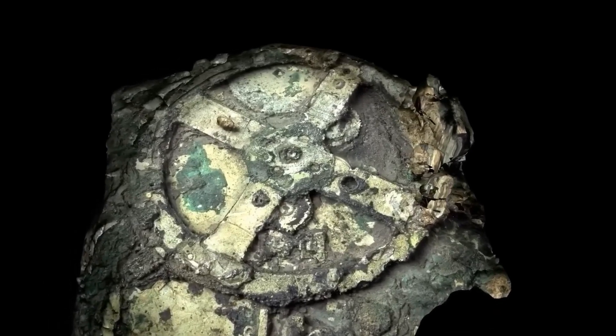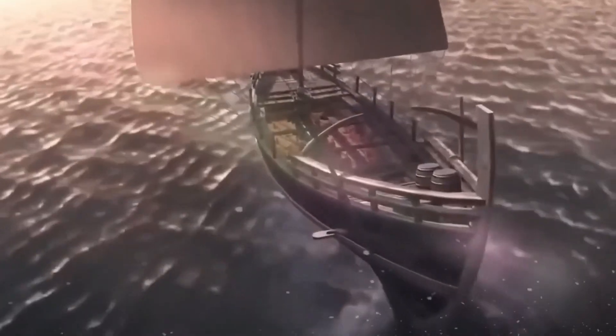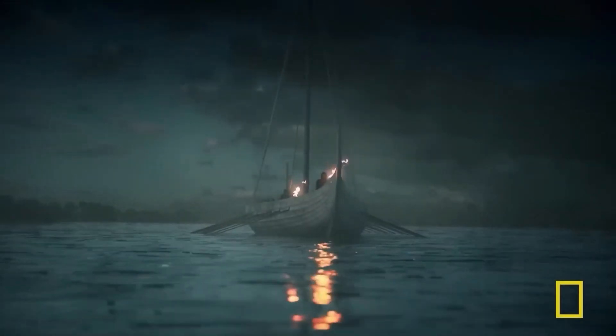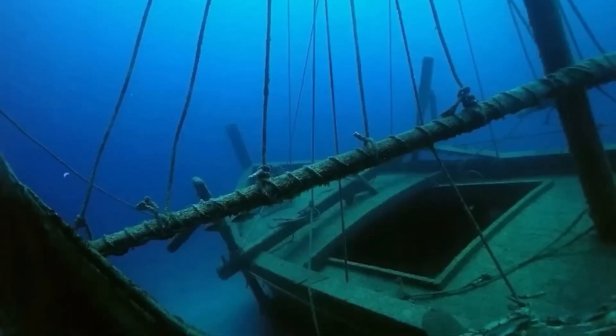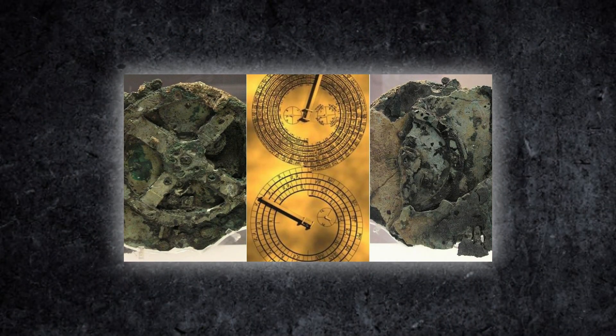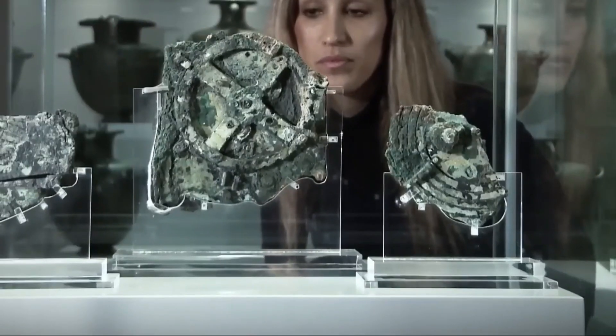The back of the device featured five dials. The Metonic dial tracked a 19-year cycle of 235 lunar months, aligning solar and lunar calendars. The Saros dial, with 223 months, predicted eclipses based on a cycle of 18 years and 11 days.